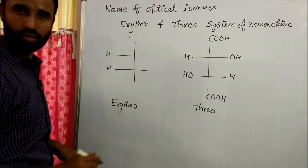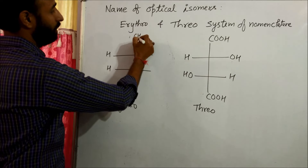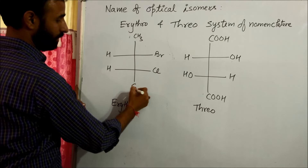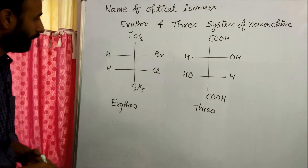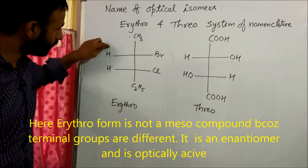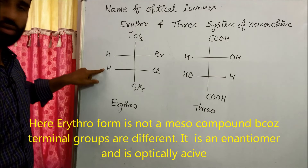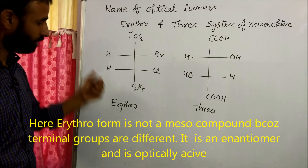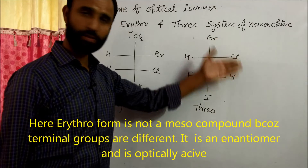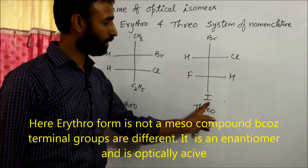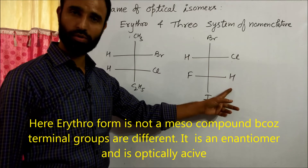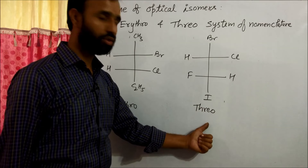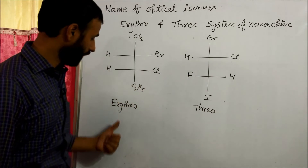Now if we replace atoms with different groups such as CH3, Br, Cl, and C2H5 — where only two groups are the same — if those two similar groups are on the same side, that is called erythro. If those two similar groups are on different sides, that is called the threo form.